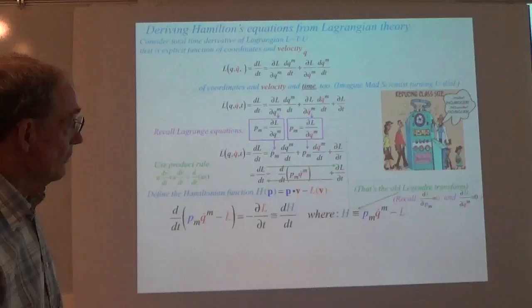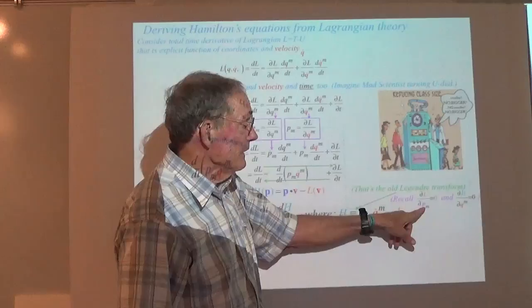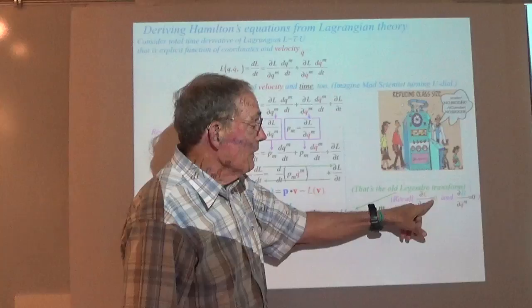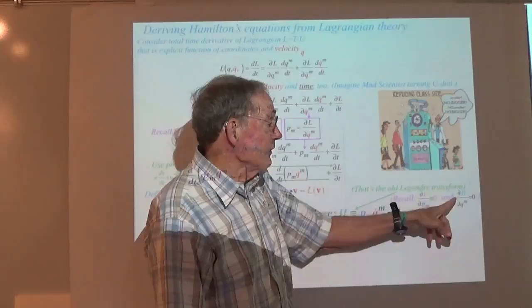Our way of looking at this is to say the partial of L with respect to P has no explicit dependence on momentum — it's identically zero. That three-bar equality sign there is definitely part of this game. And by the same arguments, the Hamiltonian is not an explicit function of velocity, so its partial derivative with respect to velocity is identically zero as well.